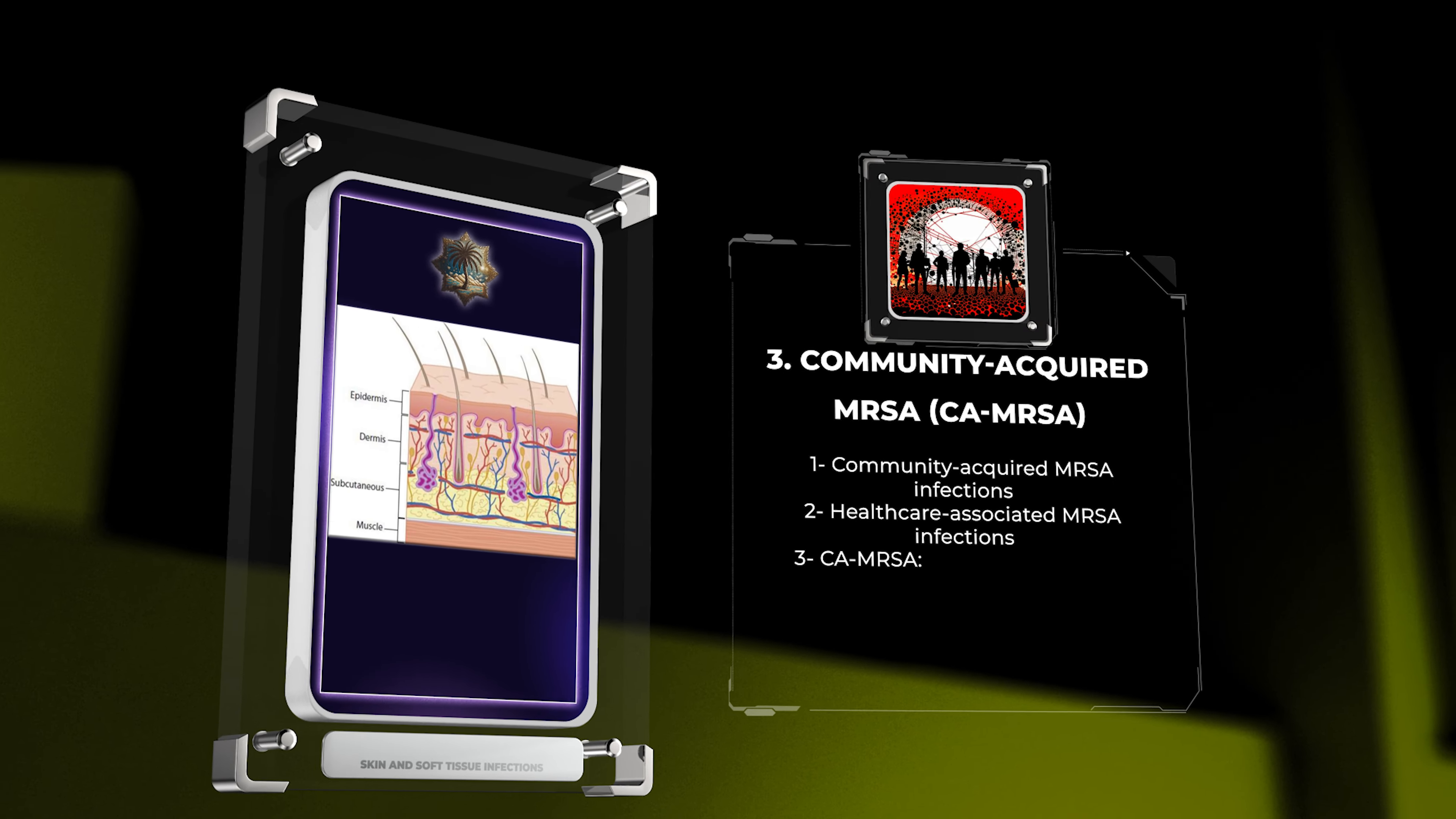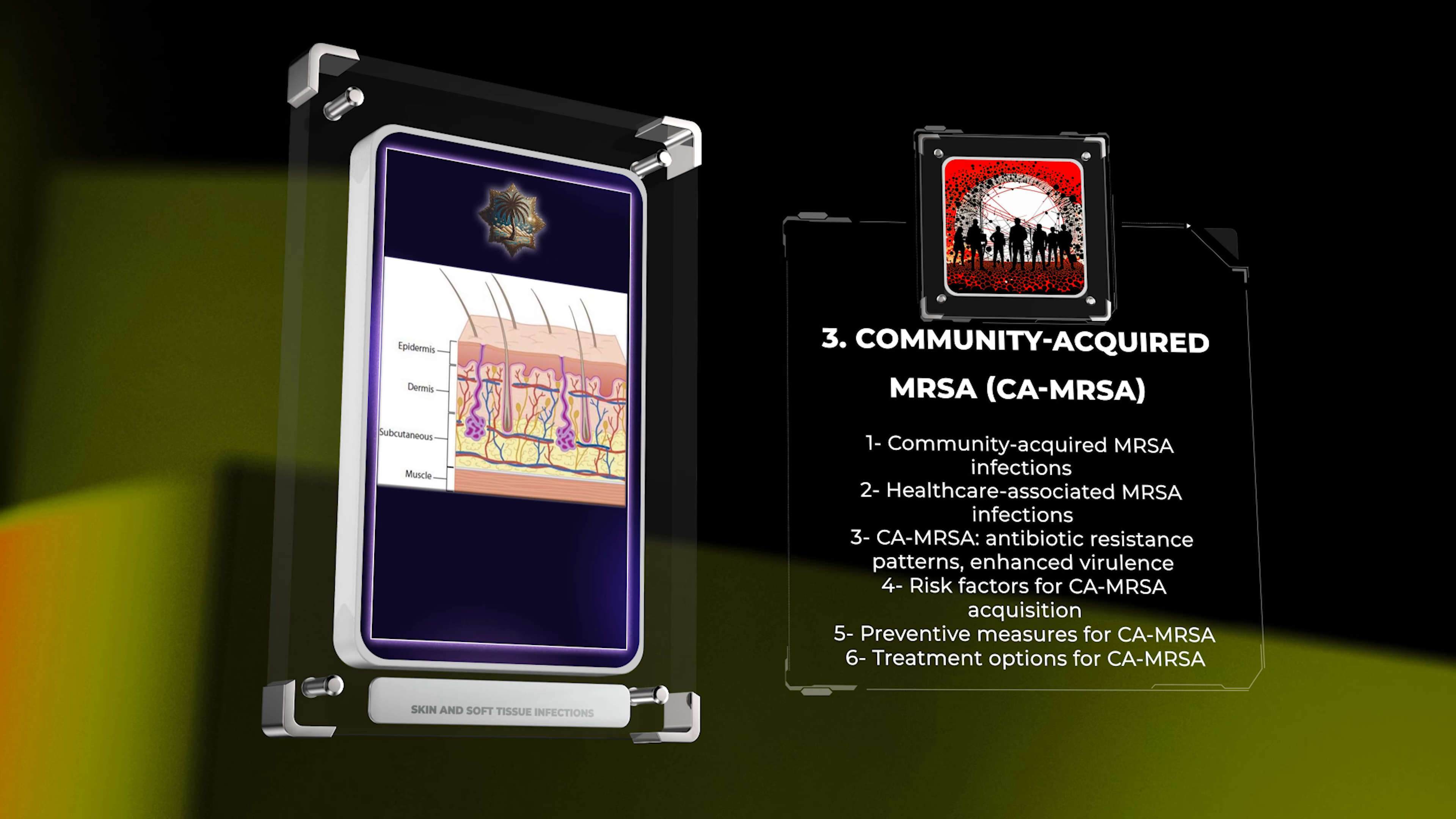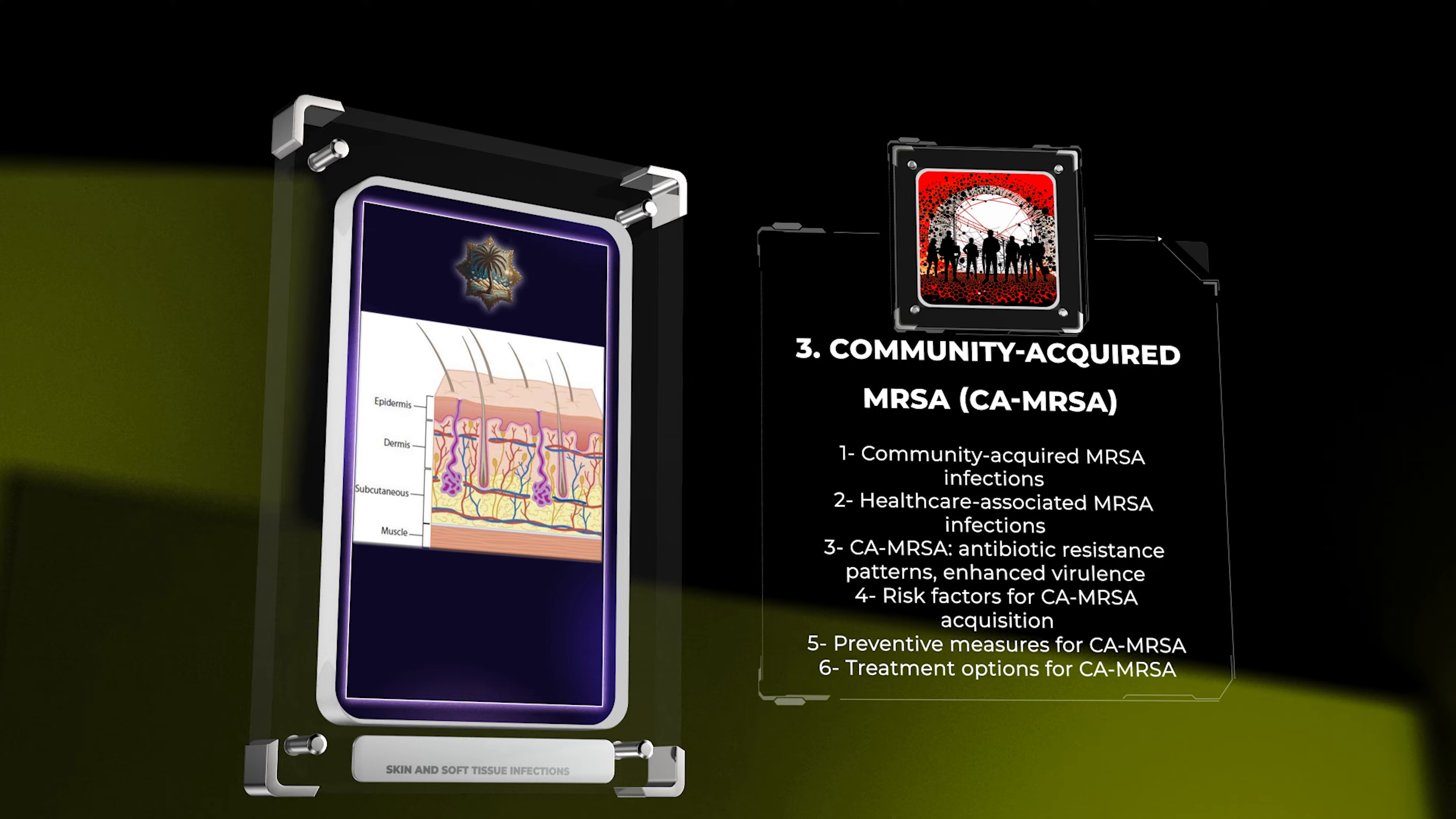Community-acquired MRSA infections differ from healthcare-associated ones in many aspects. In this topic, we will explore the unique characteristics of CAMRSA, including its distinct antibiotic resistance patterns and enhanced virulence. We will also discuss the risk factors associated with CAMRSA acquisition and the various preventive measures that can be employed.